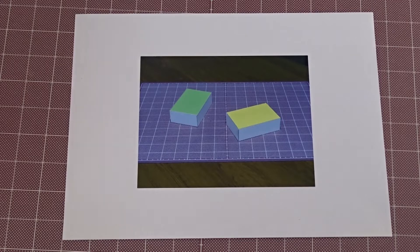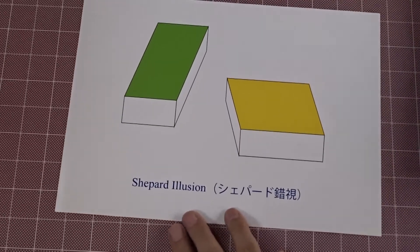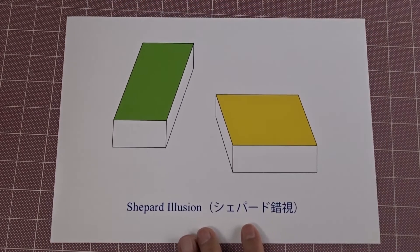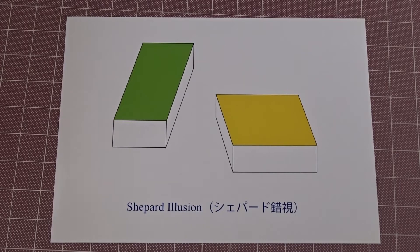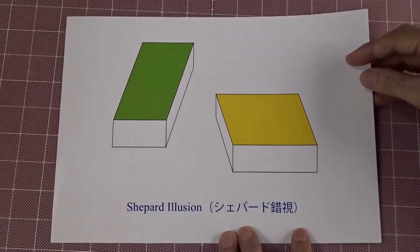Because of this fact, it is difficult for us to understand that the two parallelograms are the same in the 2D picture plane. For our brains, what matters is the size, shape, and positions of objects in three-dimensional space, and our brains usually do not care whether they have the same shape in 2D. That is the reason why we feel they are not the same.